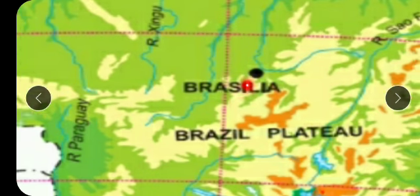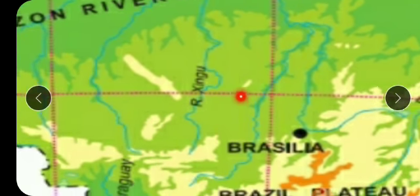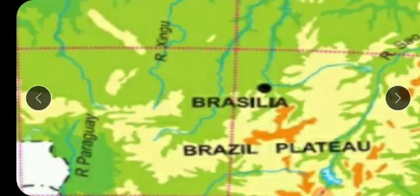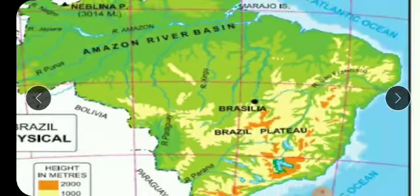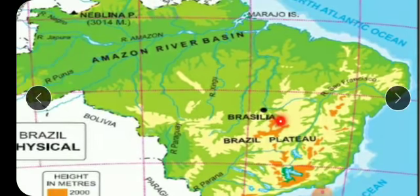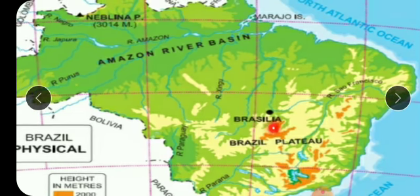Let's first talk about the parallels, or latitudes. Latitudes are horizontal lines. We need to decide the location of Brasília — whether it is towards the north or south, or east or west. If you look carefully, Brasília lies towards the southern portion, and it is more towards the west, not the east. So while writing the latitude, we write 'south,' and for the longitude, we mention 'west.'